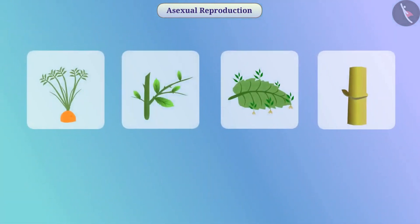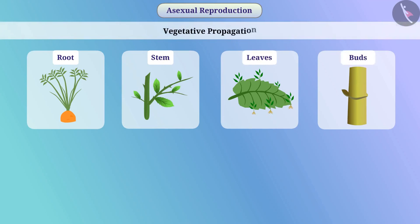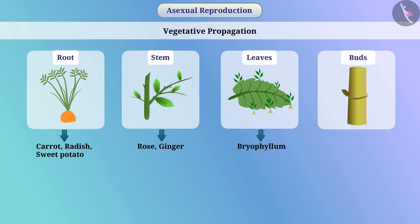In favorable circumstances, some plants can be grown from their parts like root, stem, leaves, or buds. This is called vegetative propagation. For example, carrot, radish, sweet potato, etc. can be grown from the root of the plant. Rose, ginger, etc. from the stem. Bryophyllum can be produced from the leaves. Sugarcane and various types of grasses can be produced from buds.